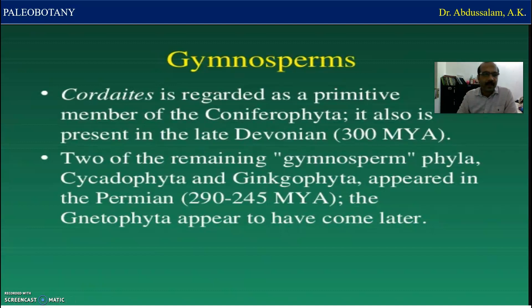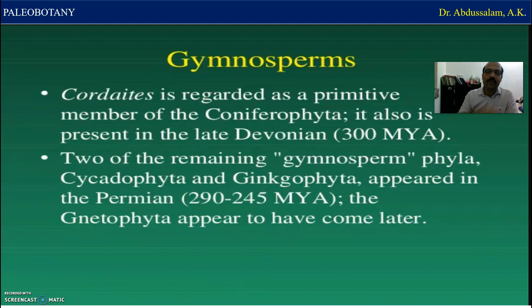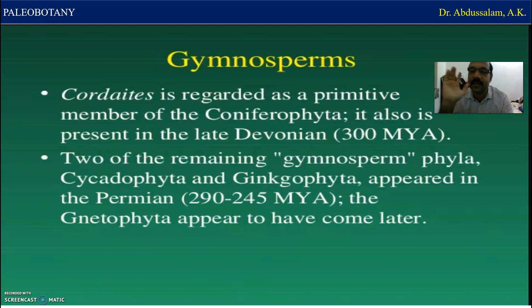What is actually a gymnosperm? Cordaites is regarded as a primitive member of the Coniferophyta. It is also present in the late Devonian period. In the Devonian period, gymnosperms were present. Two of the remaining gymnosperm phyla — Cycadophyta and Ginkgophyta — appeared in the Permian, that is 290 to 249 million years ago. The Gnetophyta appeared to have come later.